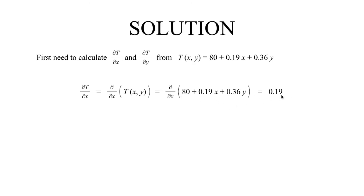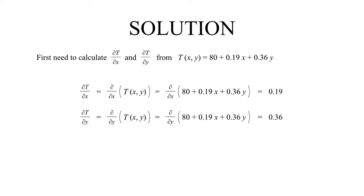If you work out that partial derivative, you should get just a single number as a result: 0.19. Next, you calculate the partial derivative with respect to y. Evaluating that: the constant term has no y in it, so that is 0; the 0.19x term has no y in it, so that's also 0; and then simply apply the power rule to the 0.36y term. You should get a single number result again, which is 0.36.